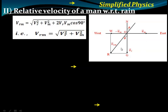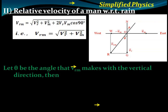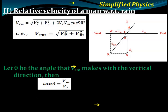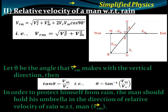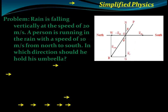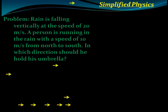Applying the Pythagorean theorem in triangle ORG gives V_rm. The angle theta that V_rm makes with the vertical is given by tan theta equals V_m divided by V_r. This gives the direction in which the man should hold his umbrella.